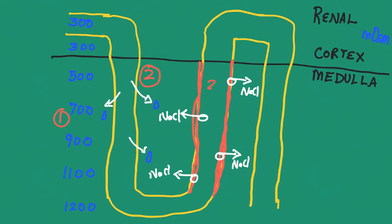Rule number four has to do with the DCT and the collecting duct. The collecting duct and the DCT become permeable to water in the presence of ADH. That is rule number four.